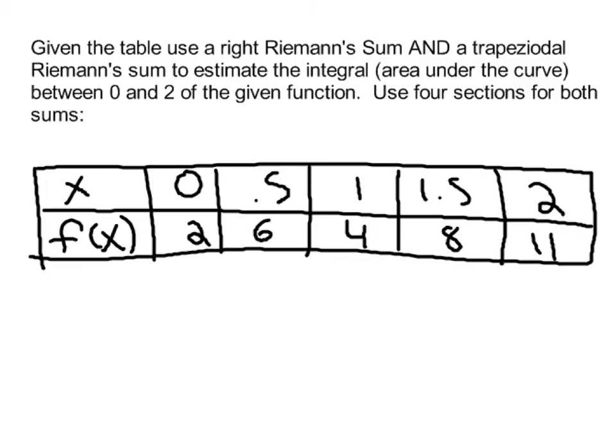All right, so we're going to start with a review of Riemann sums. Here we have a table that gives me x and y, or x and f(x) values. Draw those points and use the table to compute a right and a trapezoidal Riemann sum to estimate the area under the curve between 0 and 2. So, pause the video now for about 3 or 4 minutes while you compute those Riemann sums.